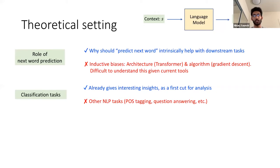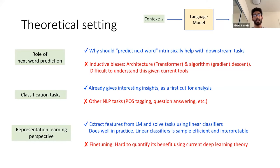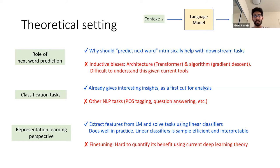For downstream tasks, as a first-cut analysis, we're only going to look at classification tasks, and we find that this already gives us interesting insights. We would hope that some of the insights can later be used to understand success on other NLP tasks like question answering, machine translation, etc. We're going to take a representation learning perspective — using a language model to extract some features, and for a downstream classification task, we fix these features and use labeled data to learn a linear classifier on top. This already does quite well in practice for many classification tasks.